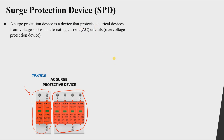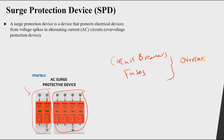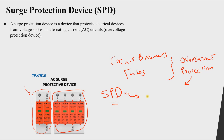In our electrical system we have circuit breakers and fuses, which are used to protect against overcurrent — they protect against short circuit and overloading phenomena. In our case, the surge protective device, abbreviated as SPD, is used to protect against overvoltage.